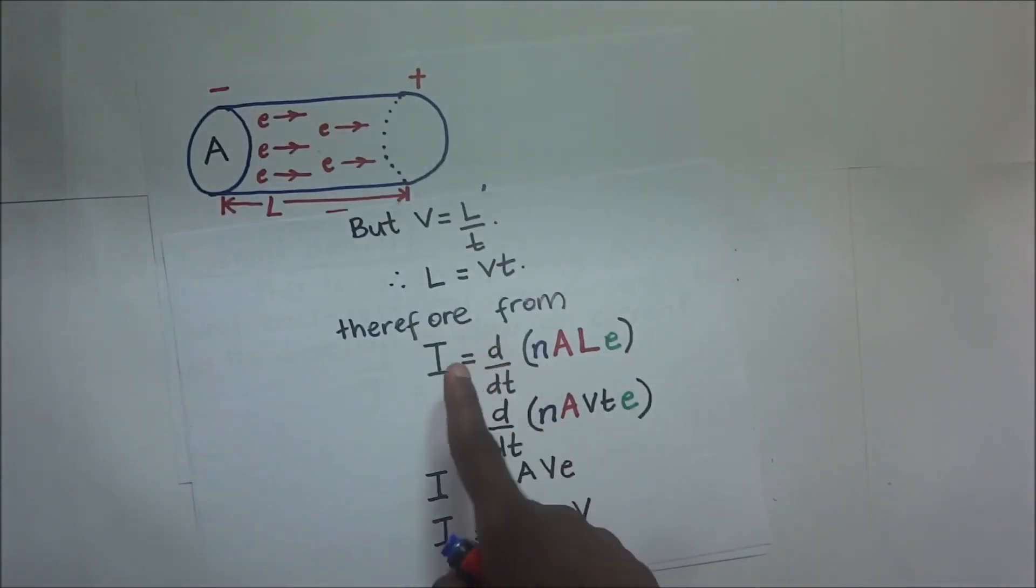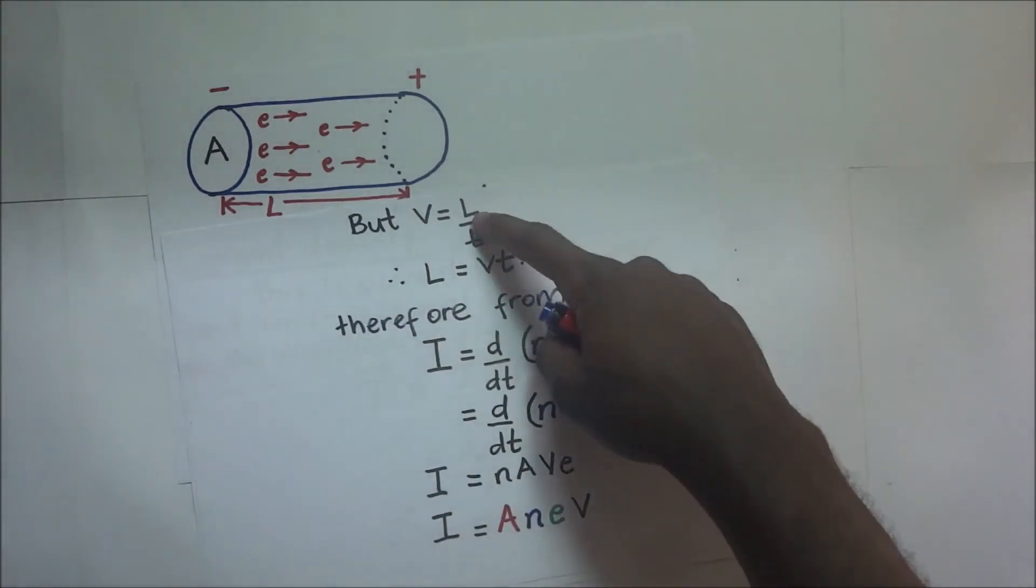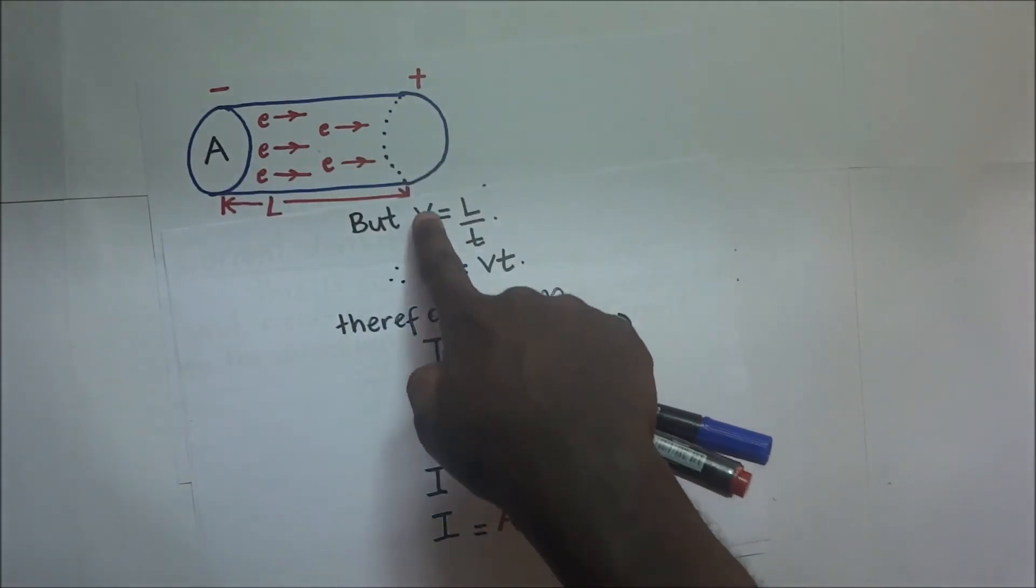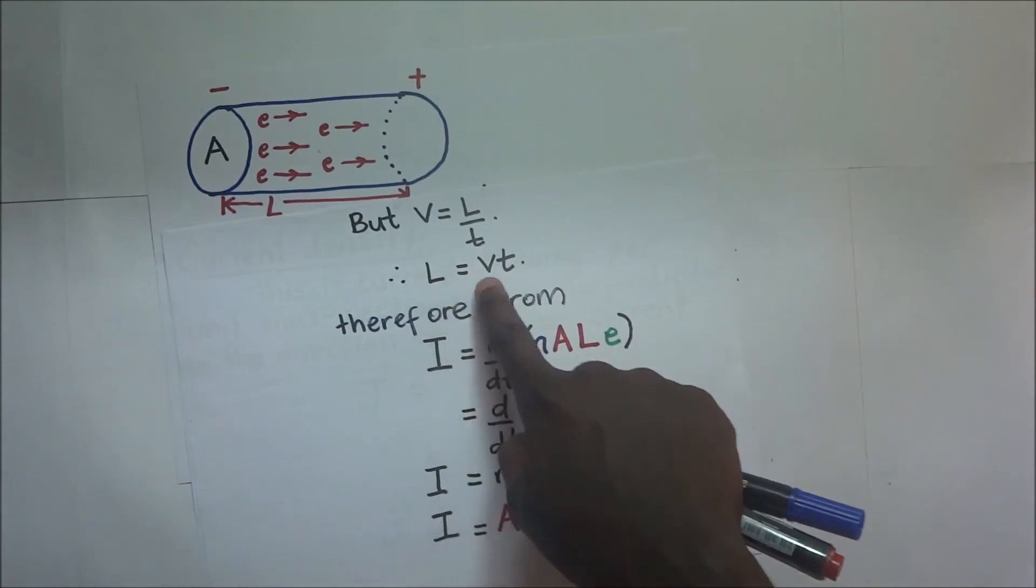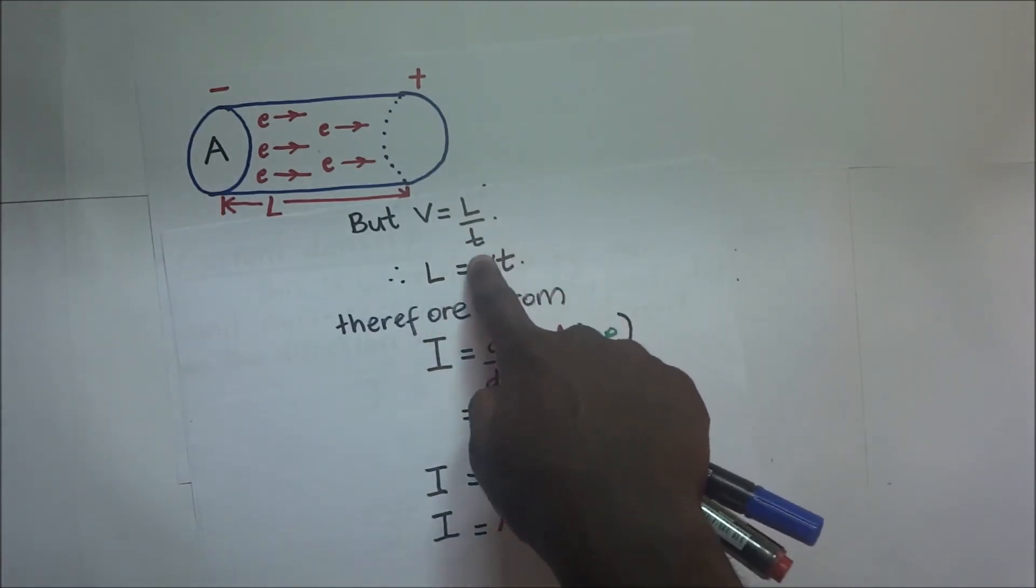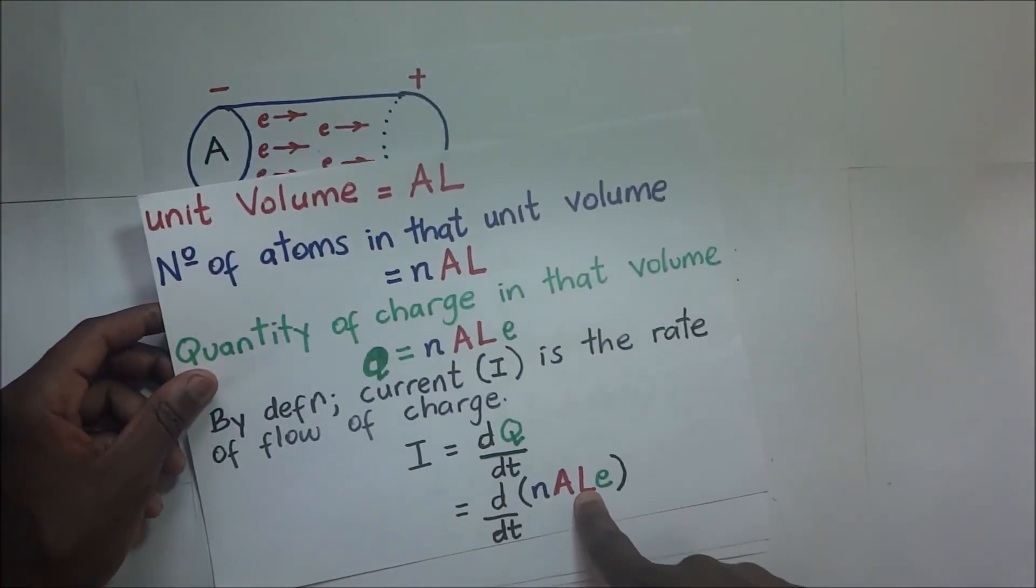So velocity, which is the speed, equals the distance, which so happens to be the length here, divided by time. And so when we make L the subject of the formula, it becomes L equals Vt. So now this Vt is what we go ahead and substitute in the place of L right there.